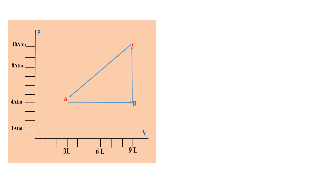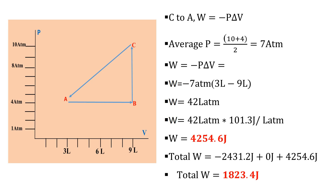For C to A, there is a decrease in both pressure and volume. Using W = −PΔV, since the pressure decreased from 10 to 4 atmospheres, we take the average pressure: (10 + 4) / 2 = 7 atmospheres. The change in volume is 3 − 9 = −6 liters. This gives 42 liter·atmospheres, then multiplying by 101.3 joules per liter·atmosphere gives a work done of 4,254.6 joules from C to A.